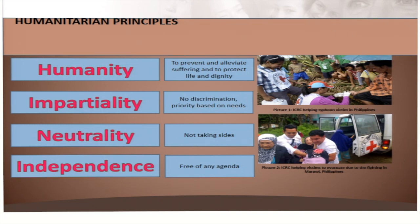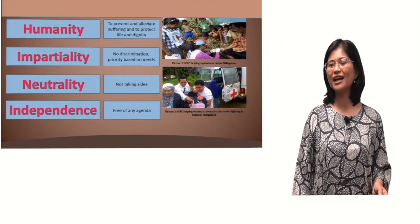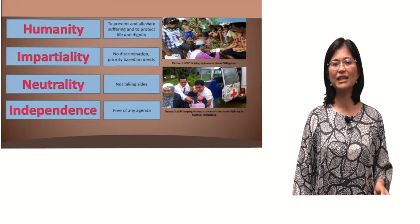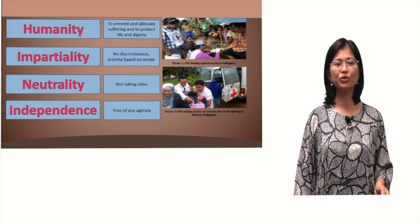Second, to ensure impartiality and not to allow any discrimination towards people who are in need of humanitarian help. Third, to practice neutrality at all times by not taking any sides of any of the actors who are involved in the crisis, and instead ensure that the humanitarian action should be decided and done according to the best interest of those who need help.